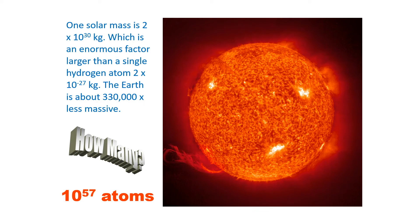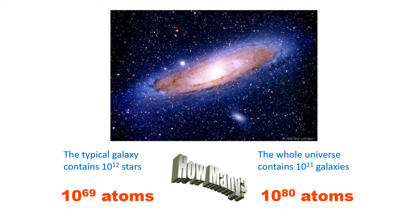What about a star? A solar mass star is 2 times 10 to the power 30 kilos, which is an enormous factor larger than a single hydrogen atom, which is about 2 times 10 to the minus 27 kilos. And so a star has about 1 with 57 zeros after it atoms. And a planet like the Earth is several hundred thousand times less massive, and so has several hundred thousand less atoms. And we can take this all the way up to the largest objects in the universe, galaxies, with typically billions of stars, hundreds of billions of stars, and the number of atoms in them is about 1 with 69 zeros.